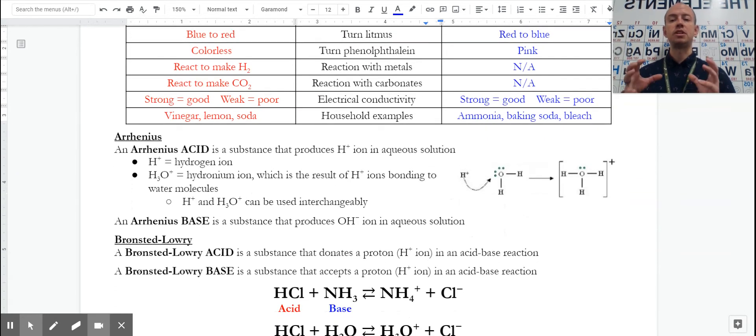But what we really need to have a strong grasp on is what defines something as an acid or what defines something as a base. And the first definition of that was by Arrhenius. So an Arrhenius acid is one that produces hydrogen ion in solution.